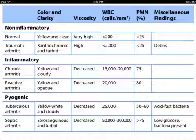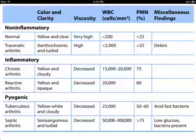In pyogenic disease, tuberculosis arthritis presents with yellow-white and cloudy fluid, decreased viscosity, WBC around 25,000, and PMN of 50 to 60. Other findings include acid-fast bacteria, which is the causative organism for tuberculosis arthritis.